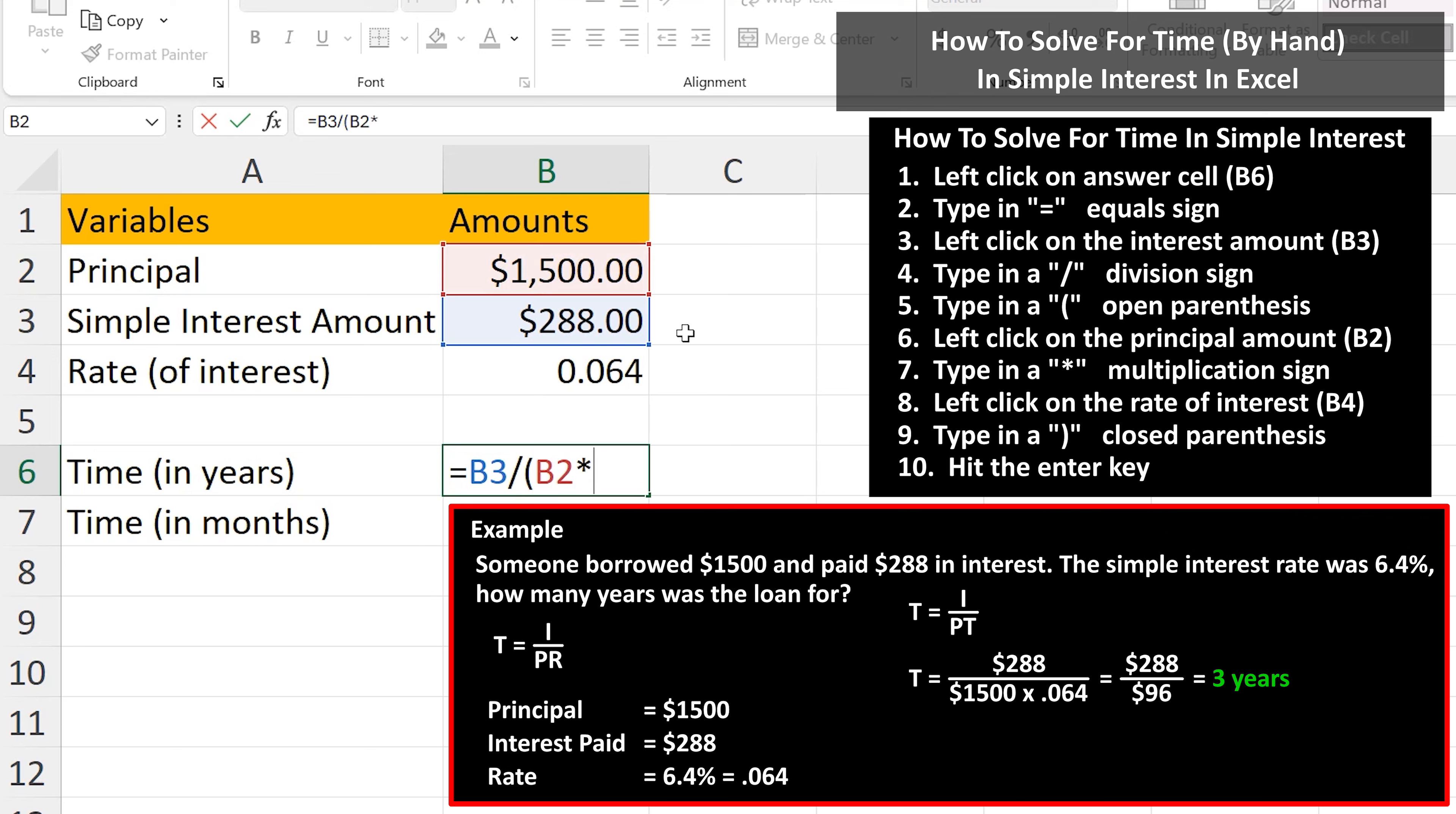Now we type in a multiplication sign, which is shift to 8 on the keyboard. And from here, we need to left click on the rate of interest, cell B4. And then type in a close parenthesis to close off the formula. And now we hit the enter key, and we have our answer of 3 years.